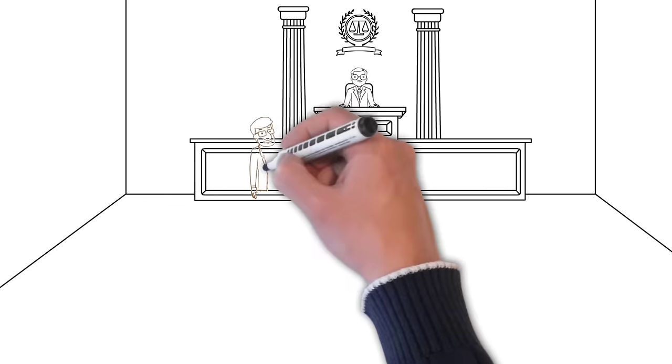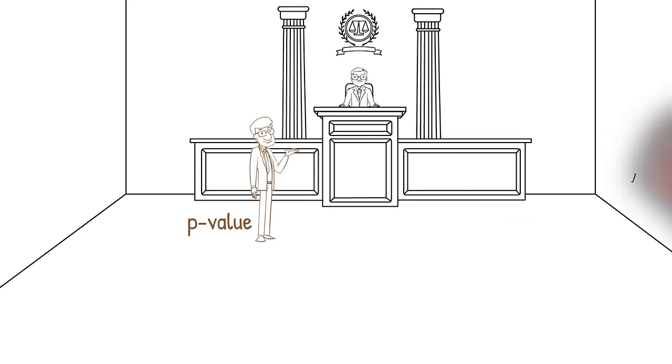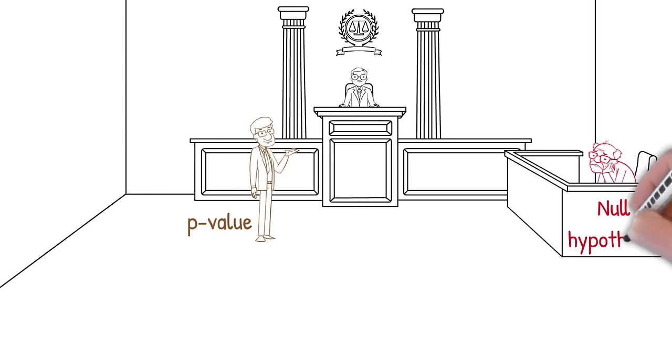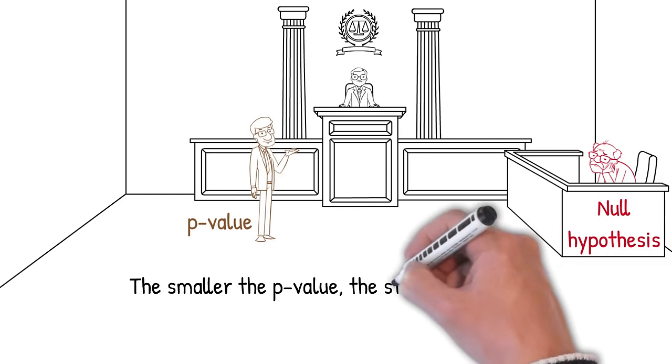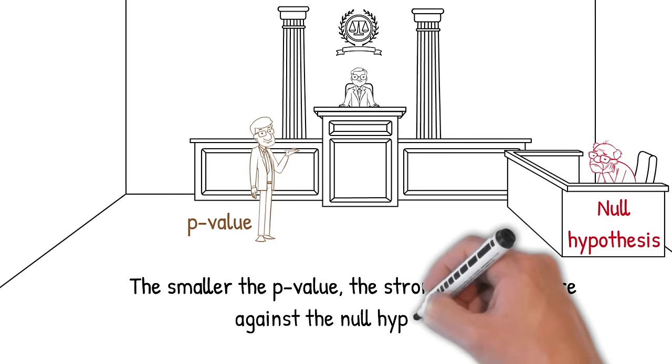You can think of this as a court trial where the defendant is innocent until proven guilty. In this case, the defendant is the null hypothesis. The smaller the p-value, the stronger the evidence against the null hypothesis.